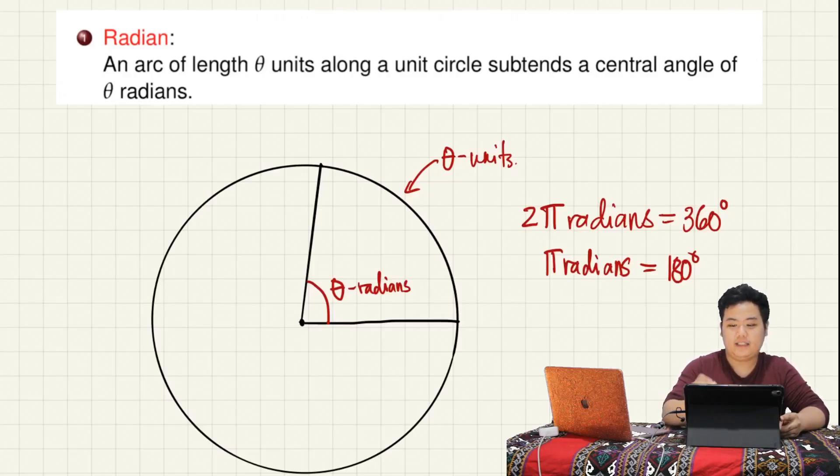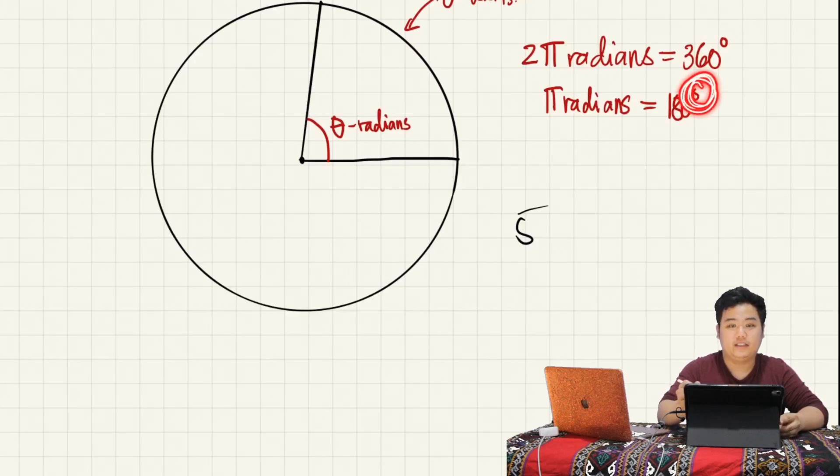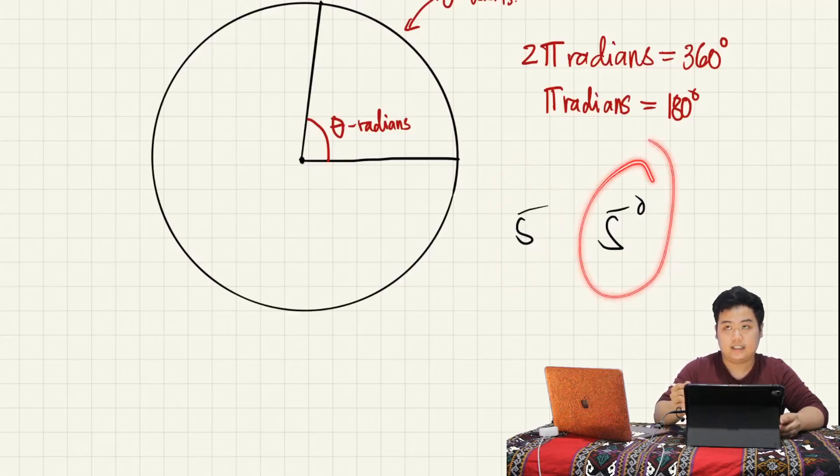Ang sasabihin ko pala, kapag wala yung unit na radians, pag inalis natin yan, automatic na radians yun. Pag sinabi natin anong measure ng angle? 5. Ibig sabihin nun 5 radians. Paano natin malalaman na degrees? May bilog na nakalagay dito. This is in radians. Radians, this is in degrees.